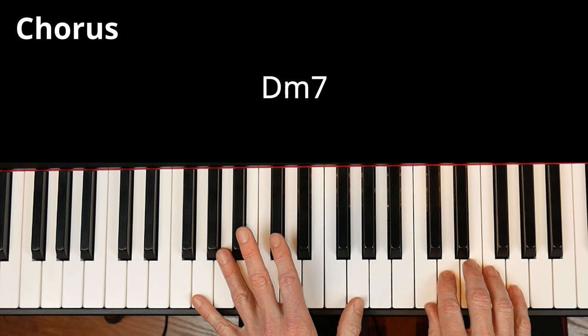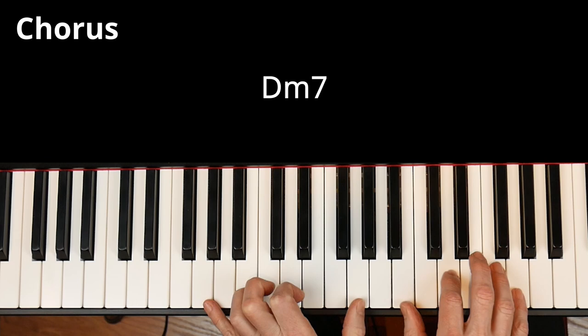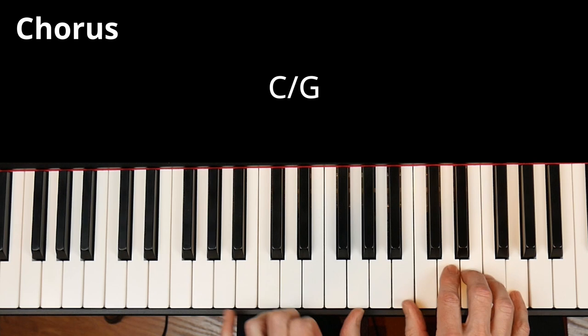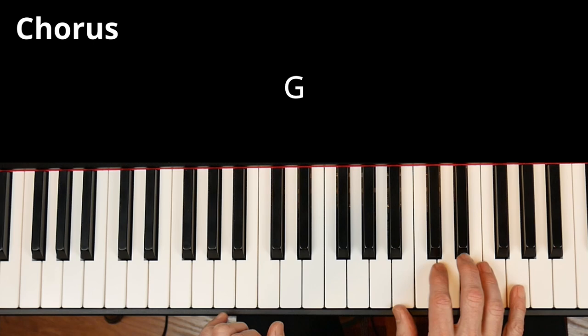D minor 7 again. Through the wind and hail. This time, C with a G in the bass. Resolve to a G. So again, from the start. It's you and me. Through the wind and hail. D minor 7. Setting sail. Now it's a G sus 4. To a G. Into the.